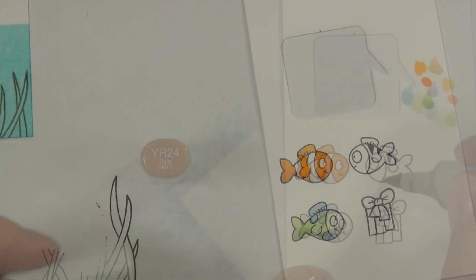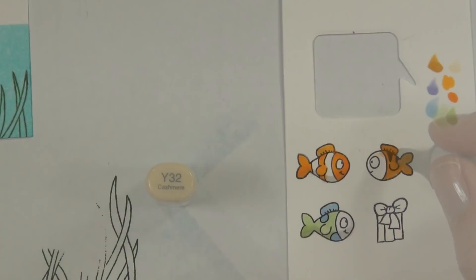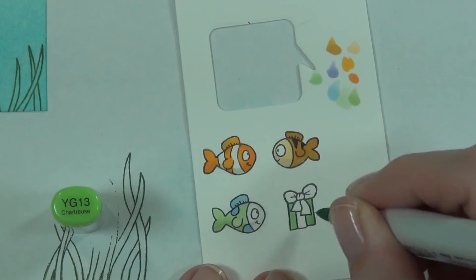So I did color up my fish in some funky colors, added some stripes to my tiger fish, and then what I like to do is come in with my gray markers. So this is the T0. I came in and actually added some shading with that.